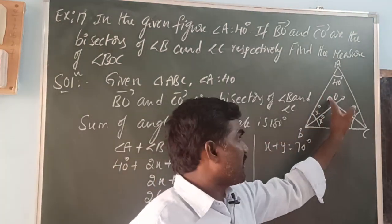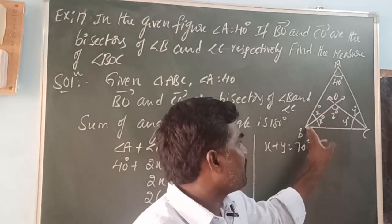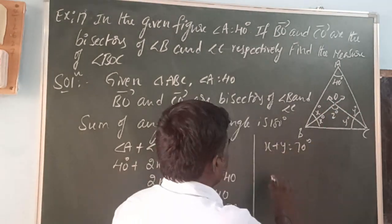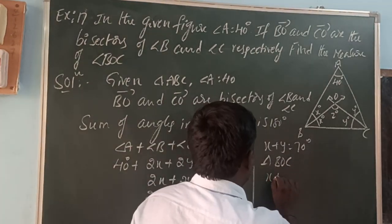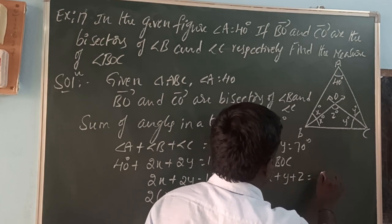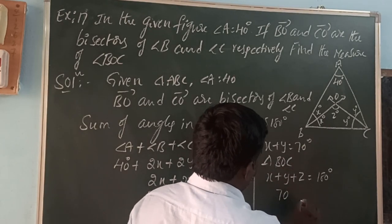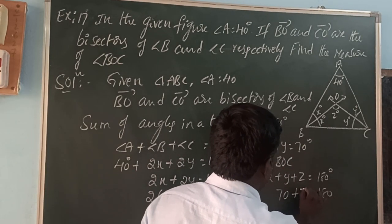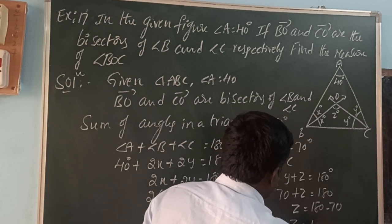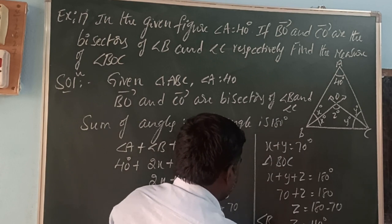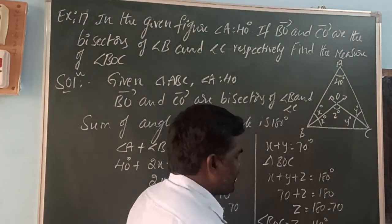BO ray and CO ray are bisectors, and the two rays intersect at point O, forming triangle BOC. In triangle BOC, the sum of angles is 180 degrees. That is X plus Y plus Z equals 180 degrees. Since X plus Y equals 70, we get 70 plus Z equals 180. Therefore Z equals 180 minus 70, so Z equals 110 degrees. Angle BOC is equal to Z, which is 110 degrees.